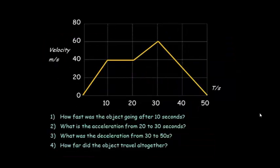Here's an exam question you could get on graphs. How fast was the object going after 10 seconds? Go up from 10, you can see it would be going 40 meters per second. What is the acceleration from 20 to 30? Well, the change in speed during that time is 20 meters per second in a time of 10 seconds, so it would be 2 meters per second squared.